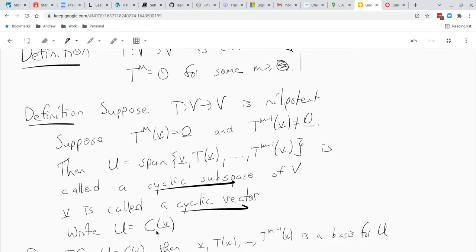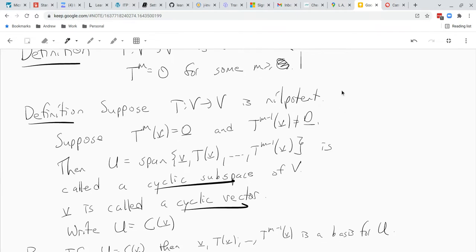Okay, so c of v is the stuff that you get when you apply powers of t to v and combine them in all possible ways. So notice, in particular, if we have a cyclic subspace, if we have a cyclic vector, then we have that c of v is the set of all things like c 0 v plus c 1 t of v, all the way up to c m minus 1 t to the m minus 1 of v.